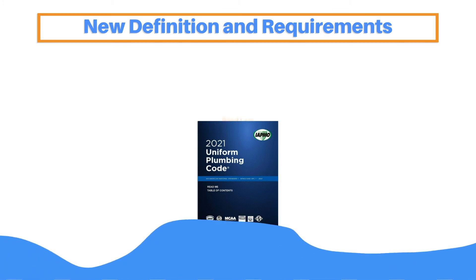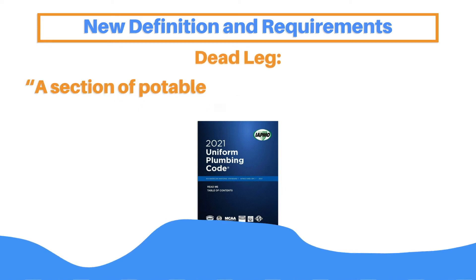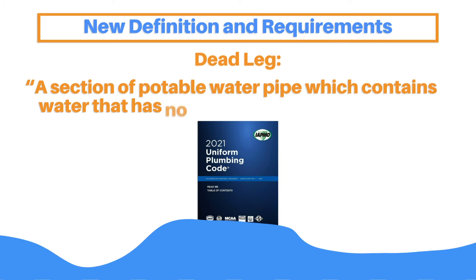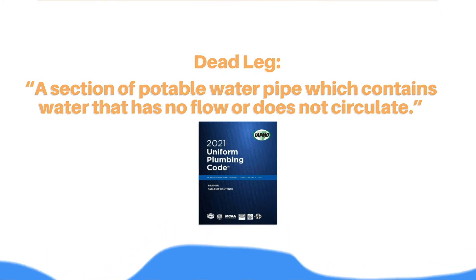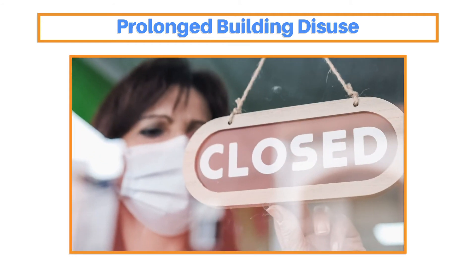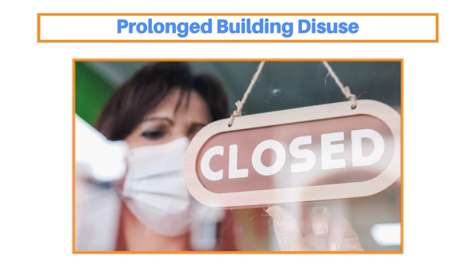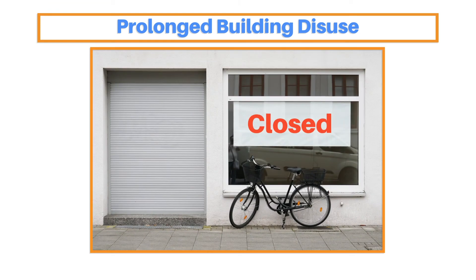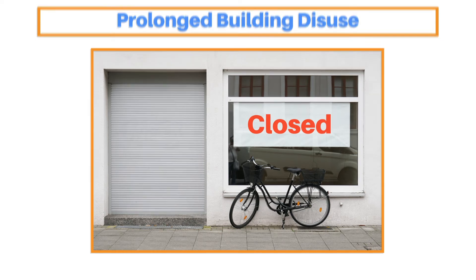The 2021 UPC defines a dead leg as a section of potable water pipe which contains water that has no flow or does not circulate. This lack of flow or circulation can happen for many reasons, but one that has become much more common recently has been prolonged building disuse due to lockdown from the COVID-19 pandemic. No matter the cause, when a building is shut down or sees a reduction in operation with significant changes in normal water use, there is the potential for serious health risks to occupants once they return to these buildings.